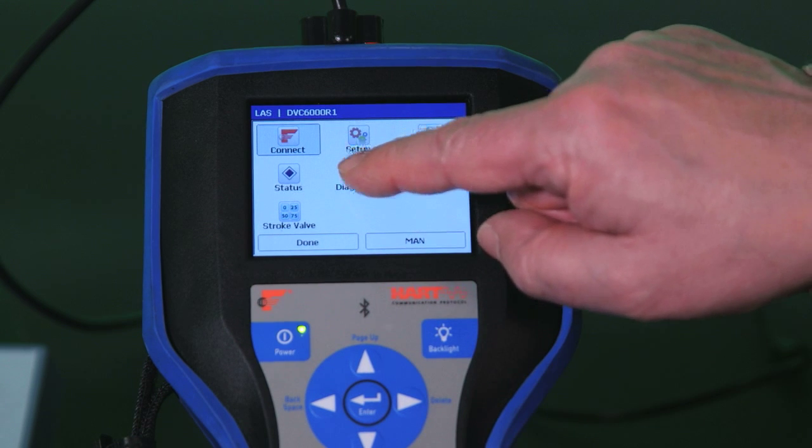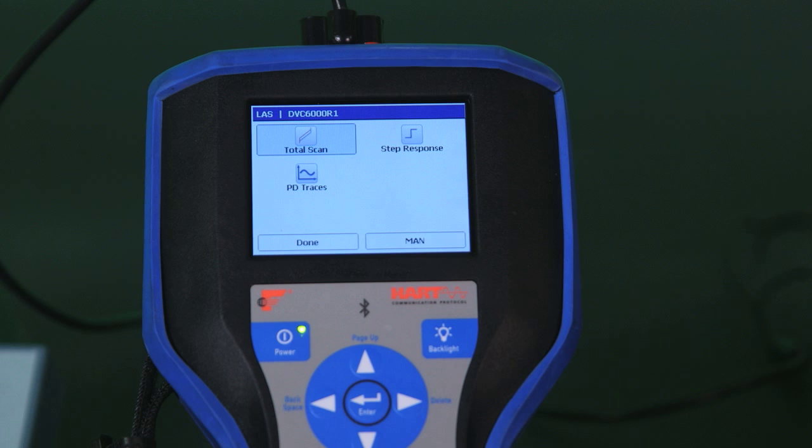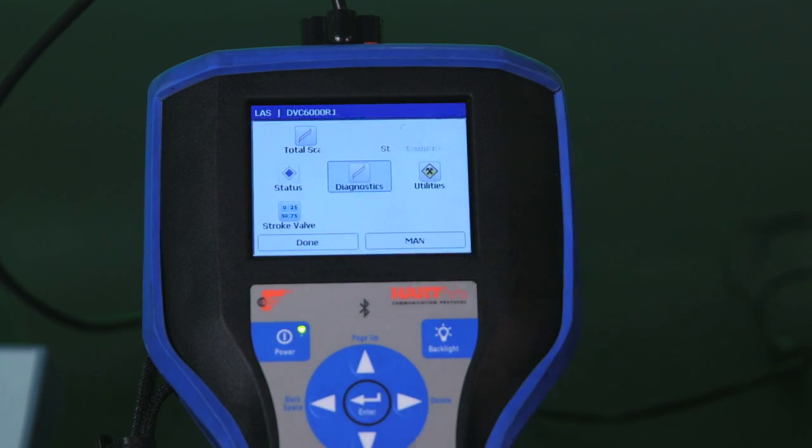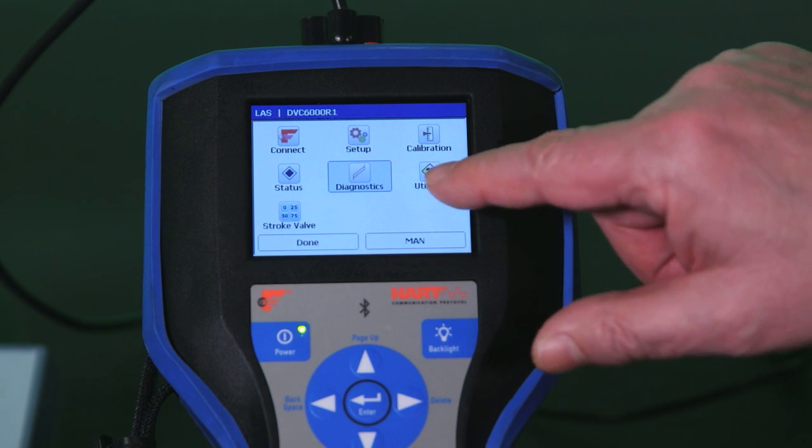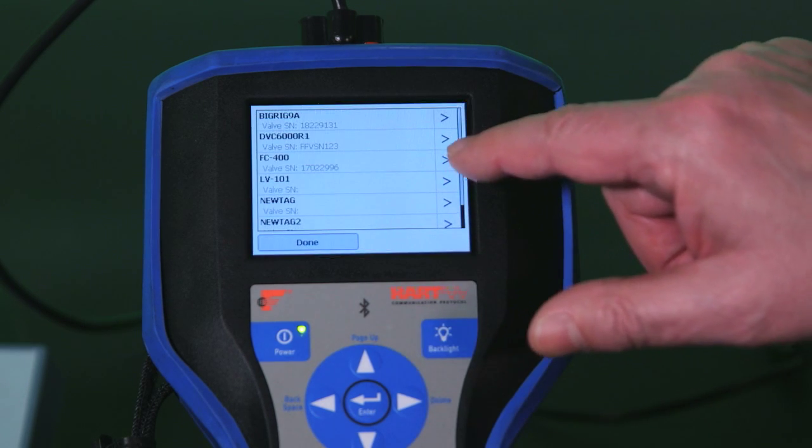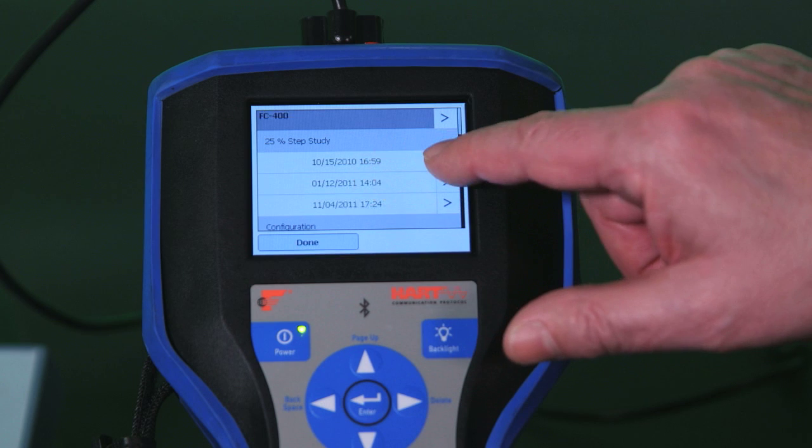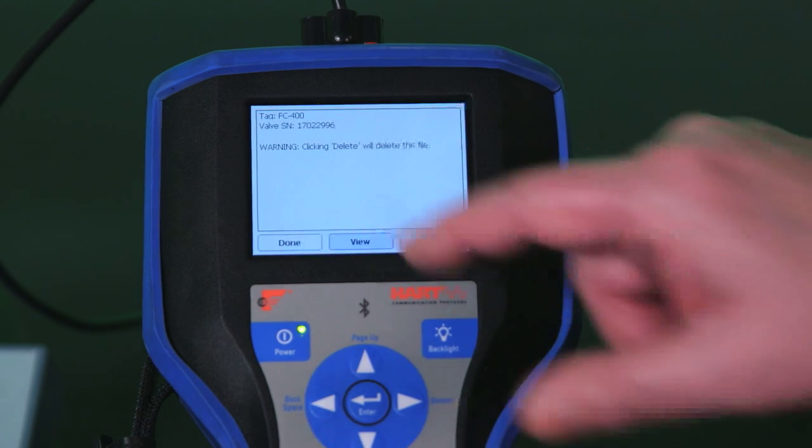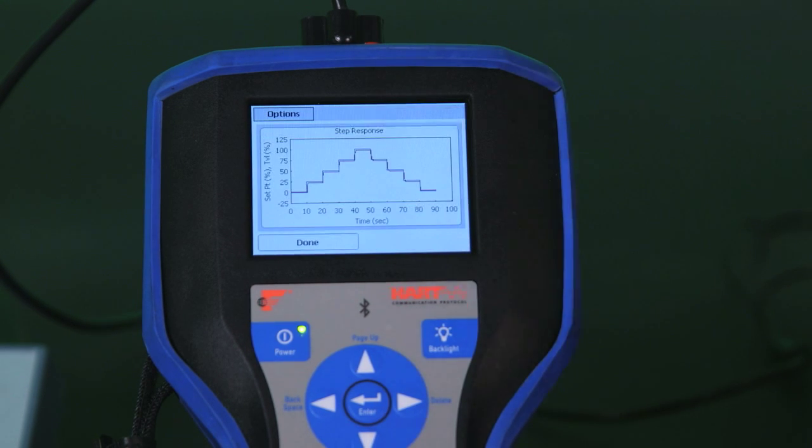I can now select the diagnostics that are available in valve link mobile. As you can see you can do things like a total scan for a valve signature. You can do a step response. For example if I select that one you see the step studies you can run. Because it takes some time to do those rather than run them right now I'm going to just show you the results of some that were run recently. So I'll call up some results on this one and you can see the type of results that are displayed in valve link mobile with these diagnostics.